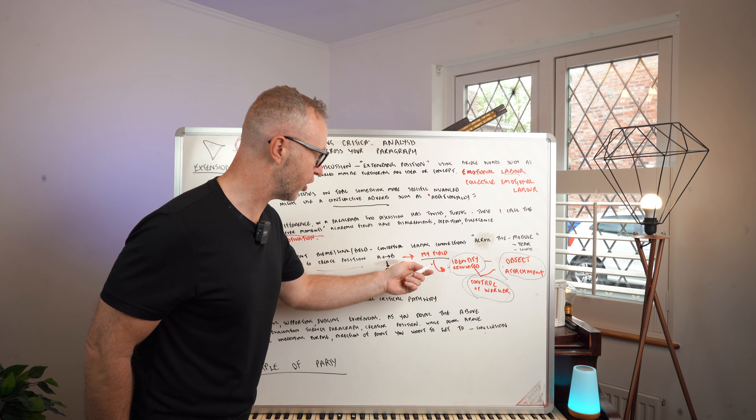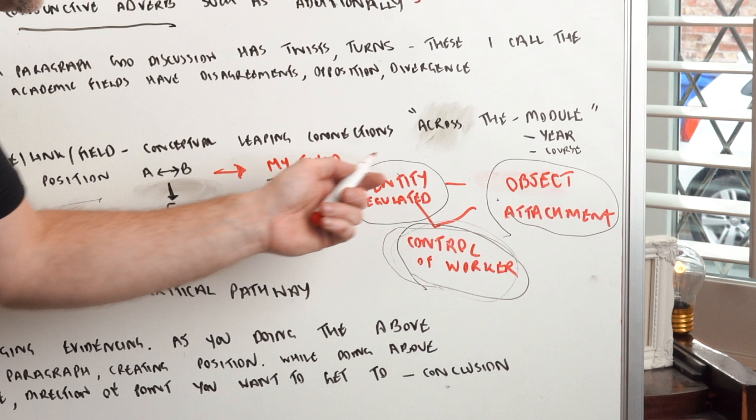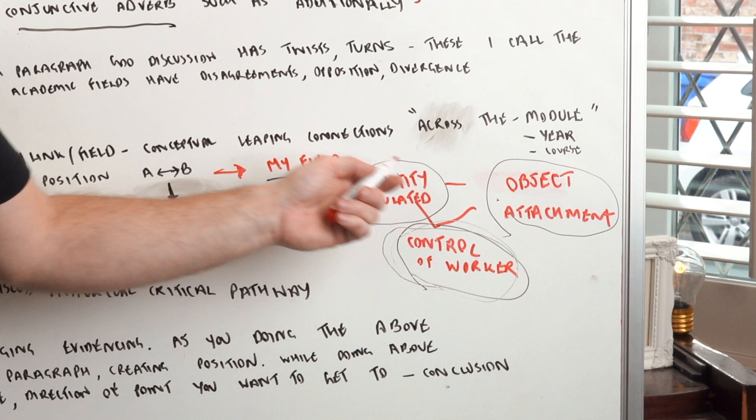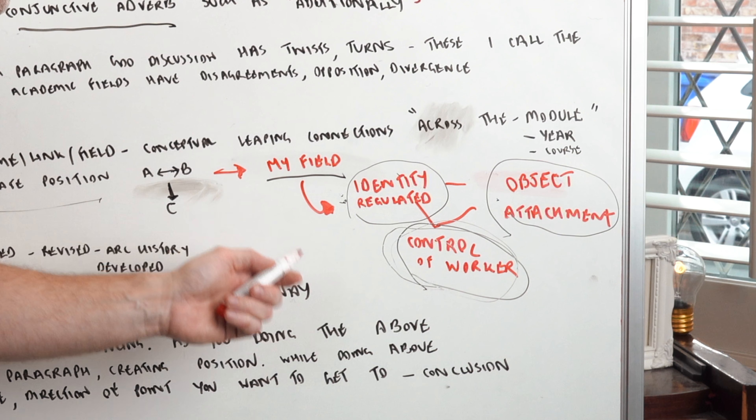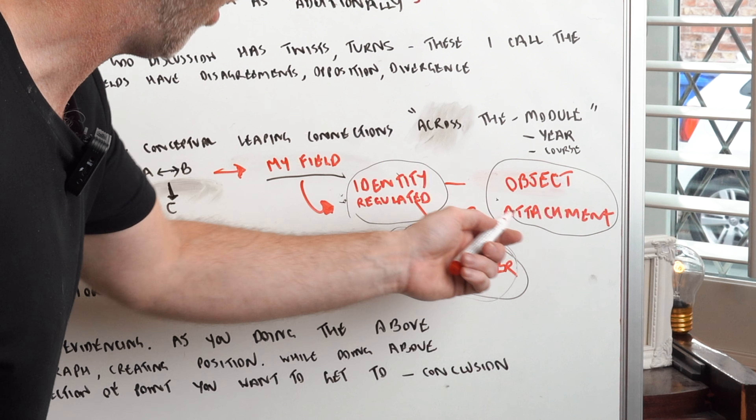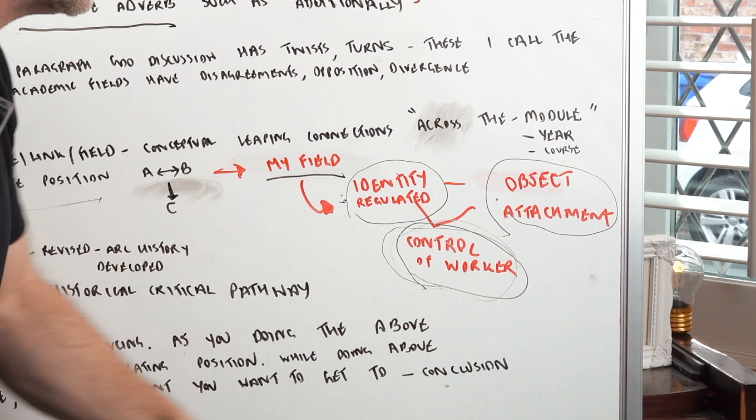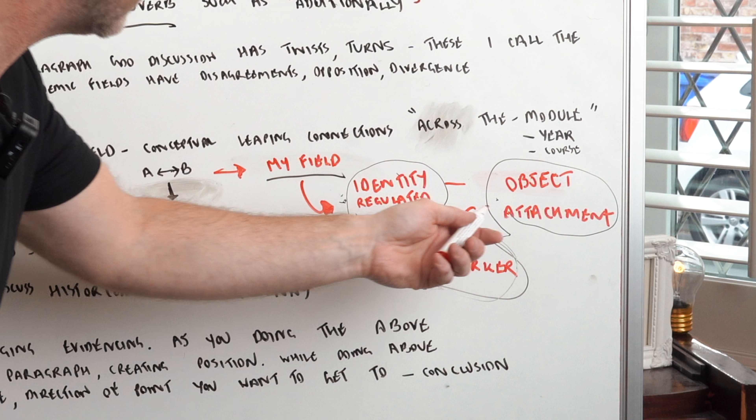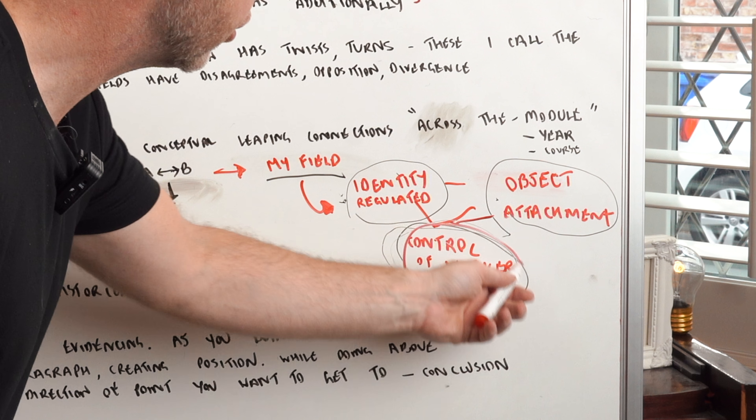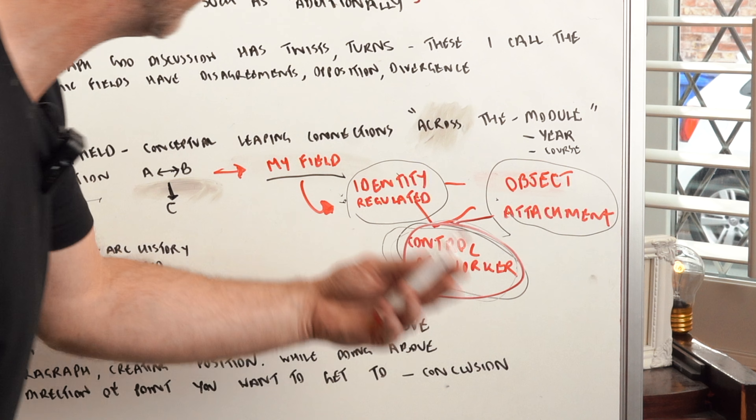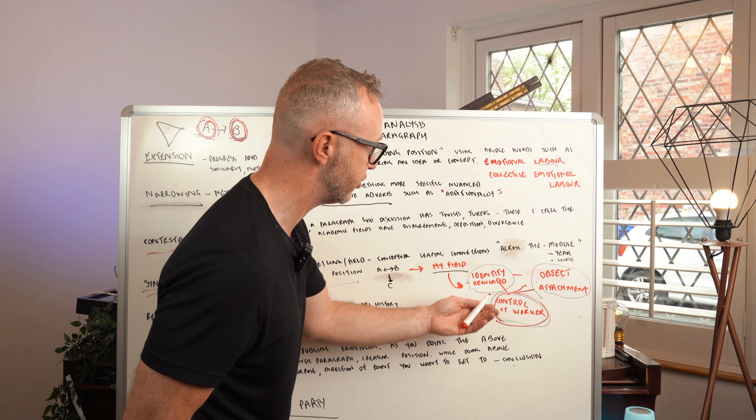A nice example I've got in my own field of management is how the identity of workers might be regulated by management and bosses. This might be done from object attachment, getting people attached to the things of work, and then that might lead us to the control of workers, soft management, controlling workers for the identity of regulation.